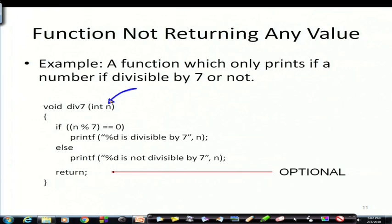The code is very simple. If n is divisible by 7, that means if n modulus 7 is equal to 0, then we print that n is divisible by 7; otherwise we print that n is not divisible by 7. In this case we are just printing directly — the output comes from inside the function.